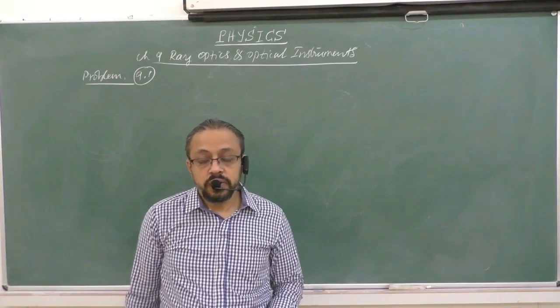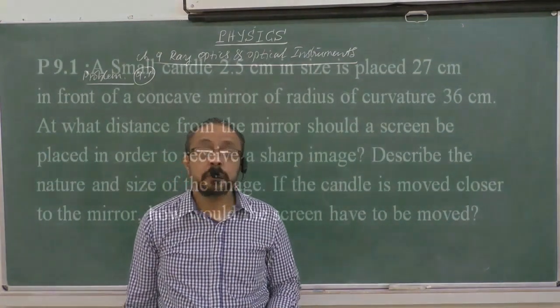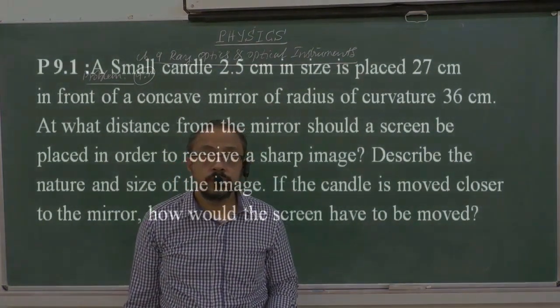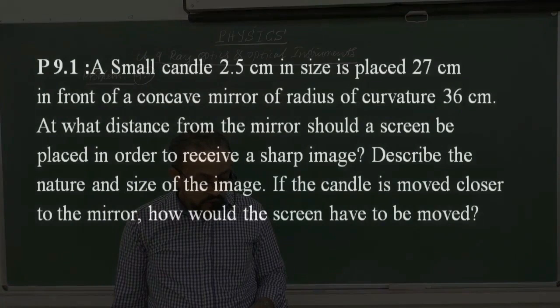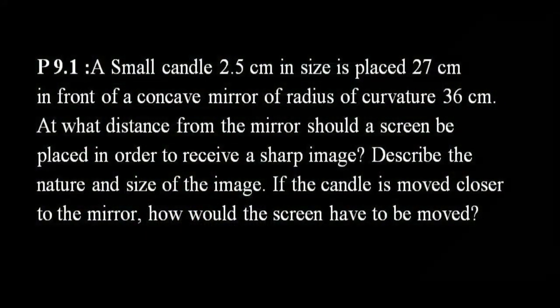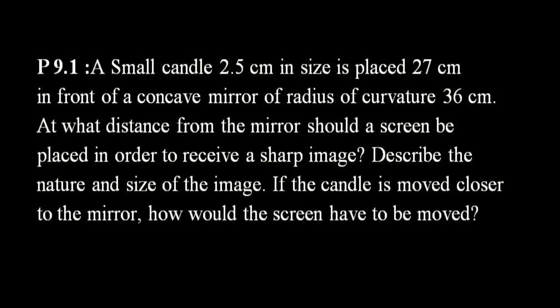Let us take the very first problem, that is 9.1. In this chapter, a small candle 2.5 centimeters in size is placed 27 centimeters in front of a concave mirror of radius of curvature 36 centimeters. At what distance from